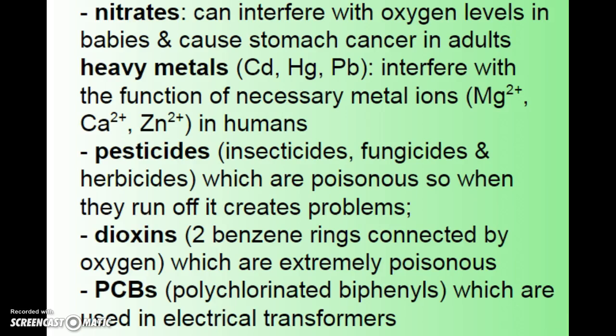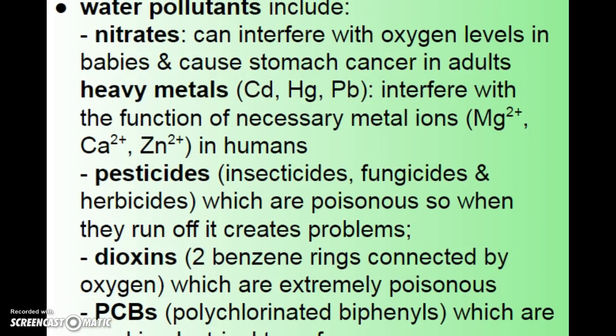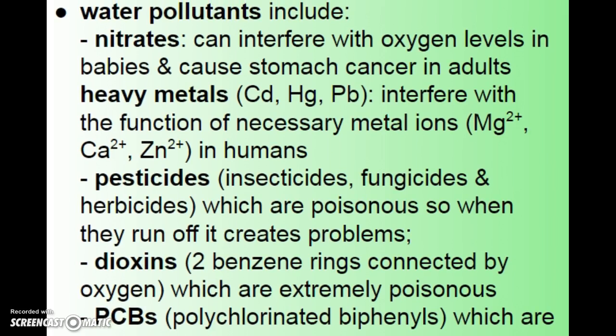Beyond dissolved oxygen and BOD, other things that commonly end up in our water include nitrates, which can come from pesticides, fertilizers, and industrial processes. Nitrates can interfere with oxygen levels in babies and cause stomach cancer in adults. Heavy metals also end up in our waters — they interfere with the function of metals we actually need, like magnesium, calcium, and zinc. The problem with heavy metals like cadmium, mercury, and lead is that they're heavy, making them hard to remove from both water and the body.